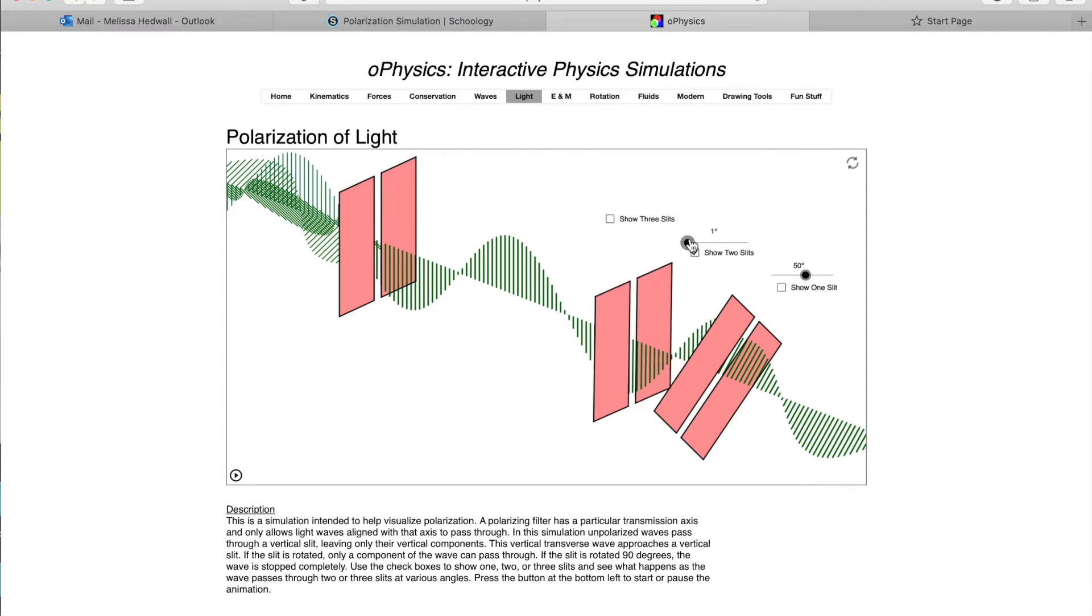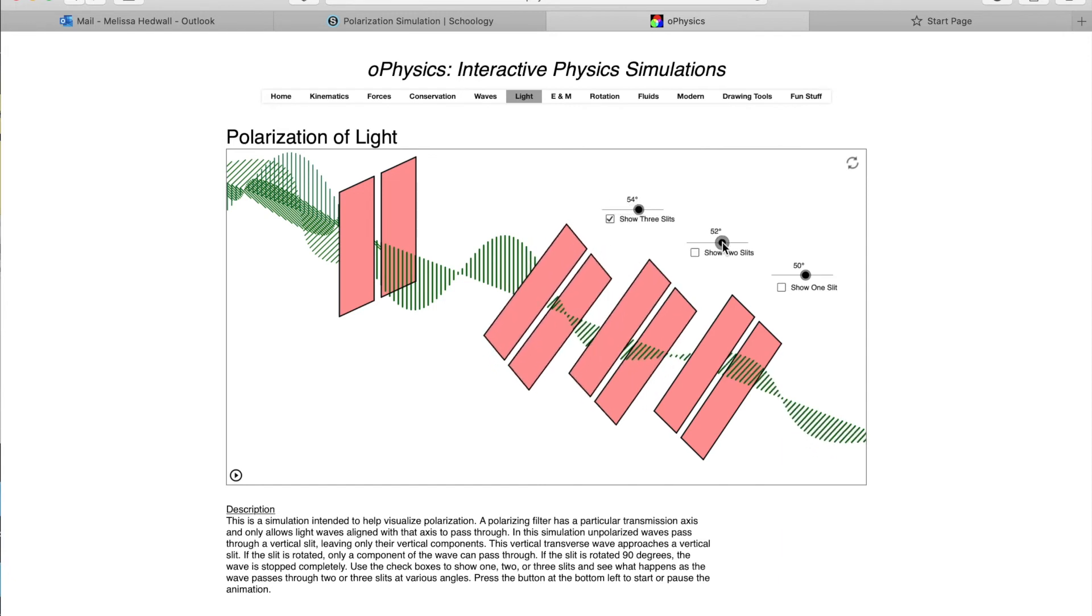So if you add that one in, you can kind of mess with that one and get different variations on what's happening. And you can do the same if you check all three boxes. Different questions in this will ask you to have various combinations.